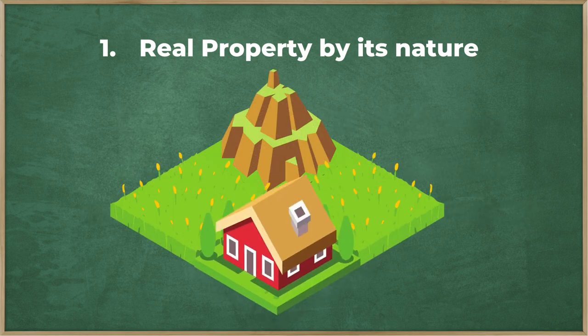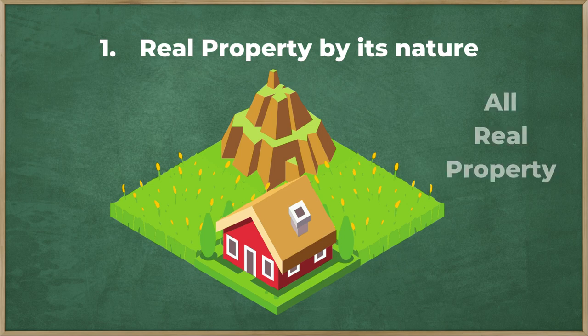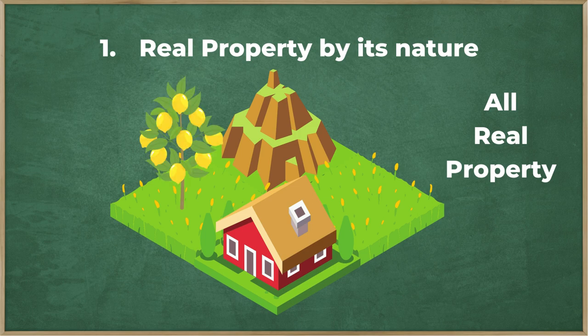Imagine you bought land with a house — that would all be real property. Also, if you plant a lemon tree, it's all immovable by its nature.